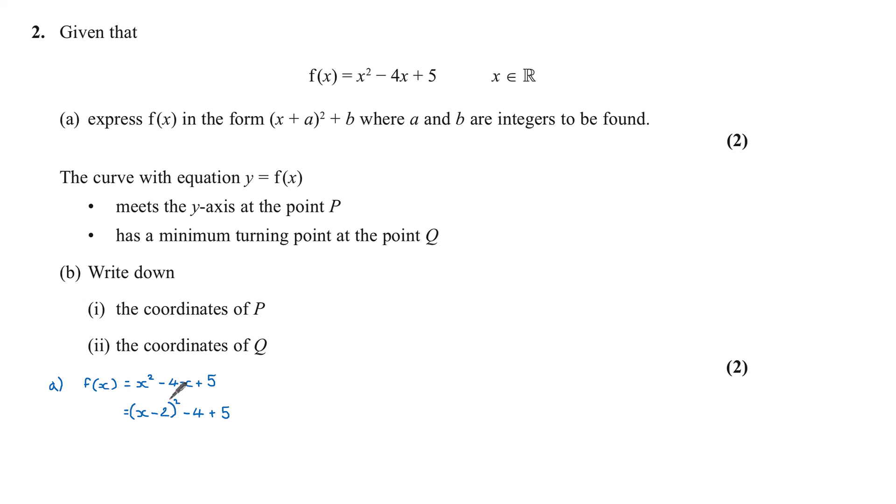The reason we halve that coefficient is if you picture x minus 2 squared expanded, you'll have x squared minus 4x plus 4. So the next step is to subtract that 4, because that's surplus to requirements. And then bring down our plus 5. We can simplify the minus 4 plus 5, and this is plus 1.